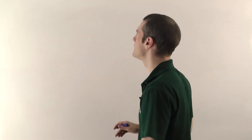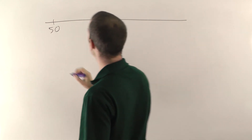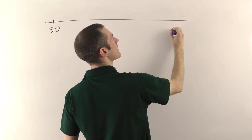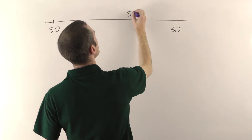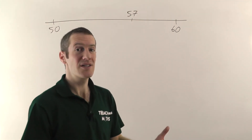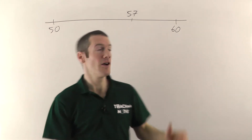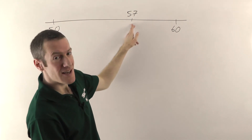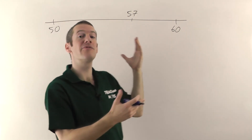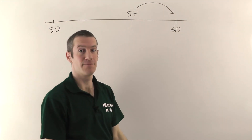Let me go over some concepts first. Imagine you've got a big number line — we'll stick 50 on that end and 60 on that end, and we're going to pick a number in the middle, let's go with 57. The question is: if we were to round 57 to the nearest 10, is it closer to 50 or closer to 60? Well, you can see from the picture that 57 is closer to 60 than it is to 50.